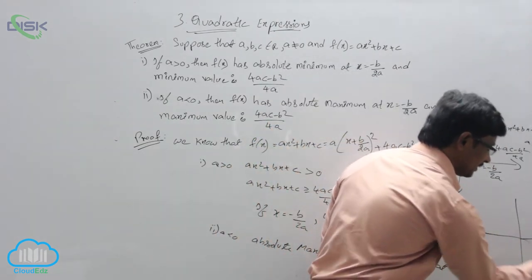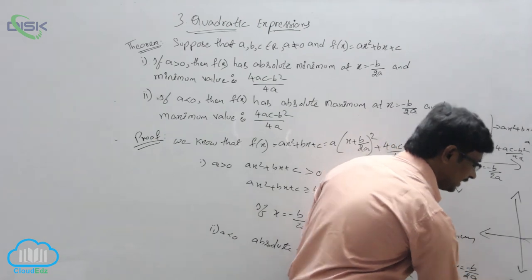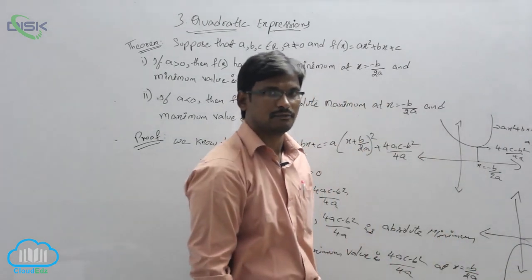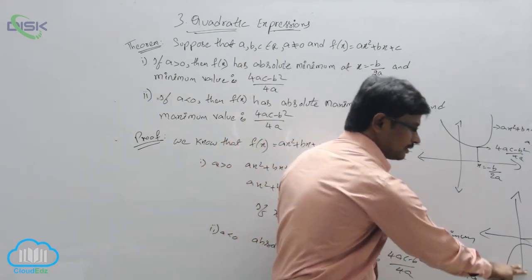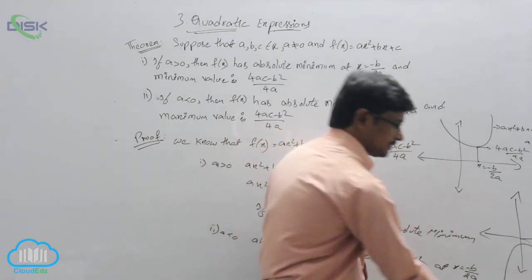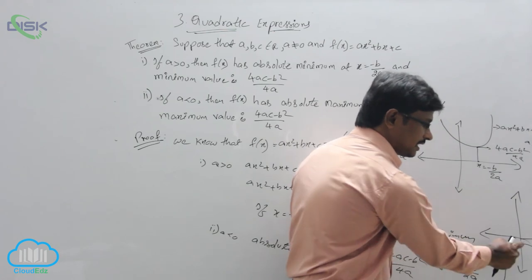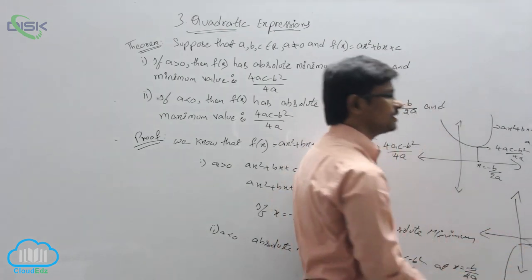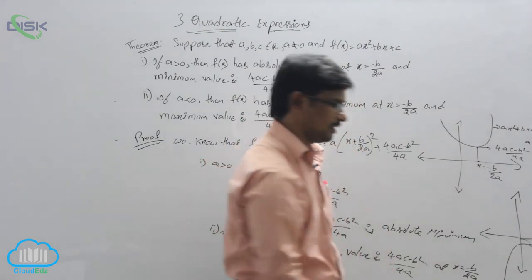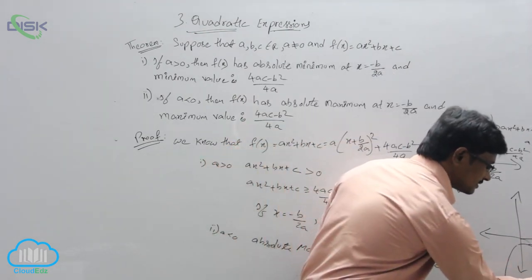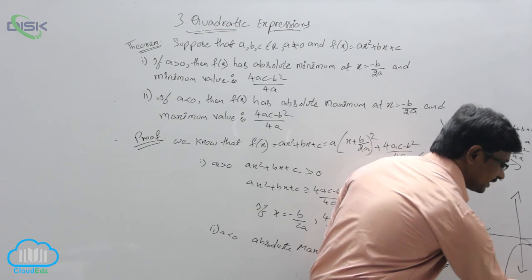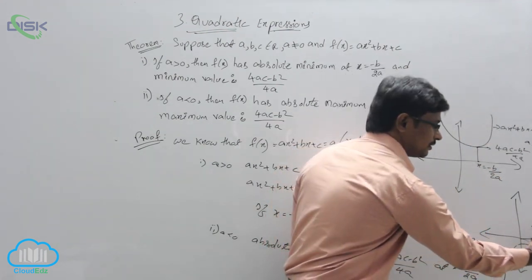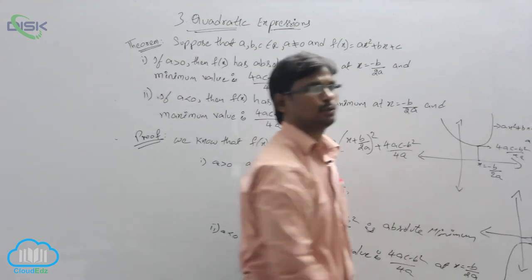If a < 0, the graph opens downward, towards the negative portion of the y-axis. The values are all lesser, so the peak point is called the absolute maximum value, which is (4ac - b²)/4a at x = -b/2a.